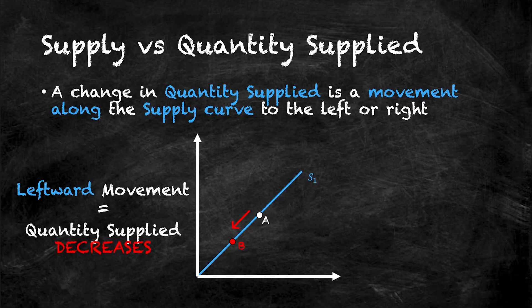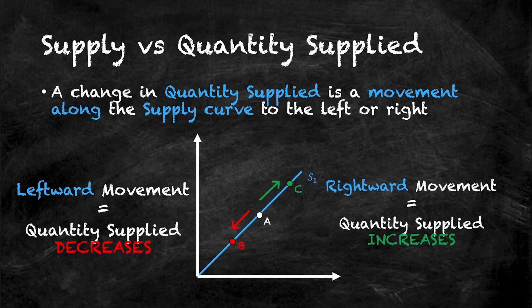And just as I could have a movement along the curve to the left, a rightward movement along the supply curve means that quantity supplied increases as I move from point A to point C.